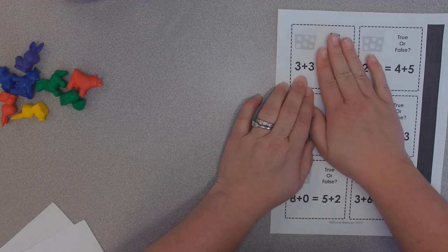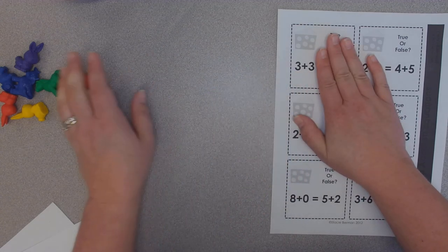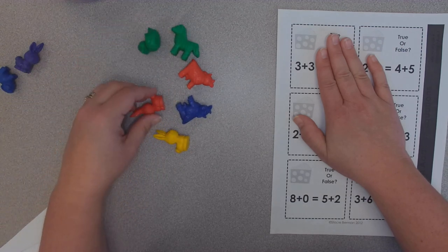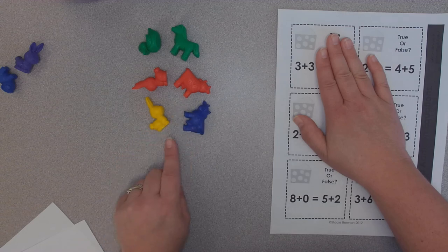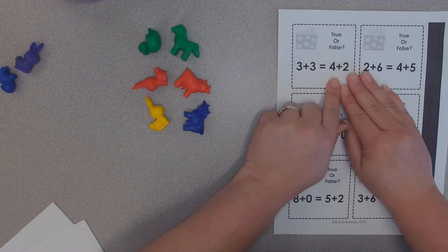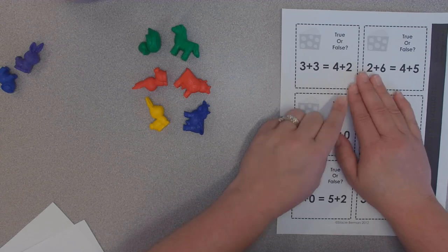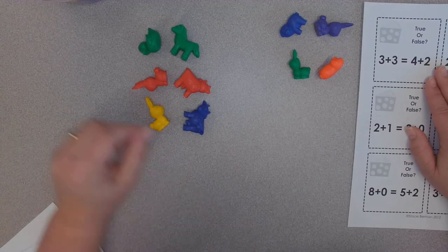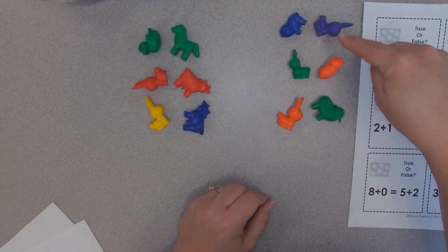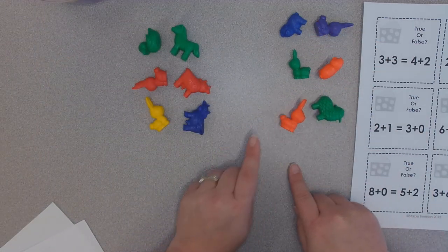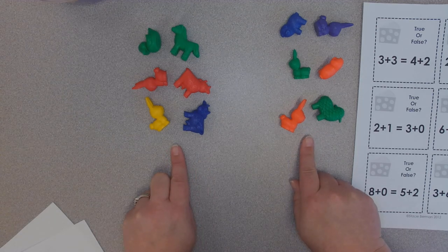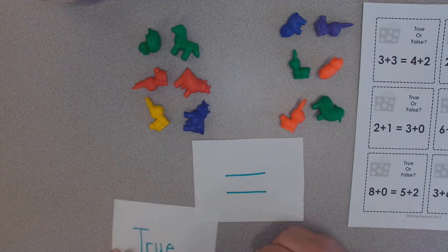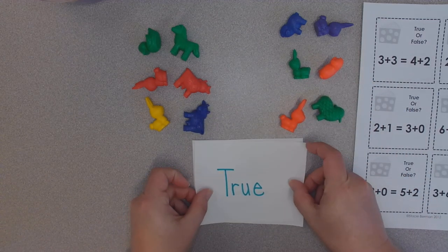So we are going to start with this side, 3 and 3. No problem. Here is 3 and 3. Now if you know your doubles, you know that is 6. I am going to look at the other side, 4 and 2, 1, 2, 3, 4 and 2 more, 4, 5, 6. Are these the same amount on both sides? Yes, they are.